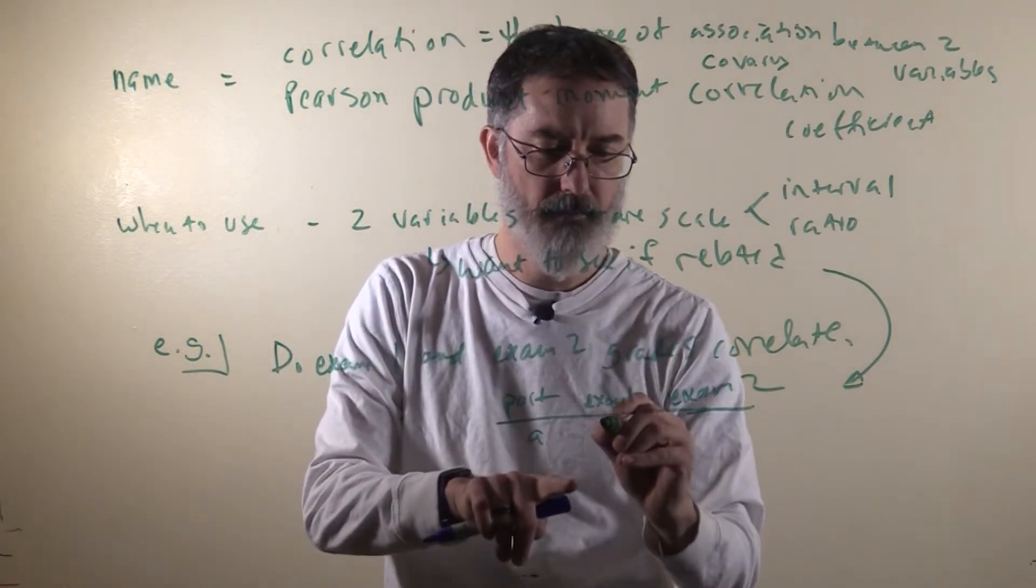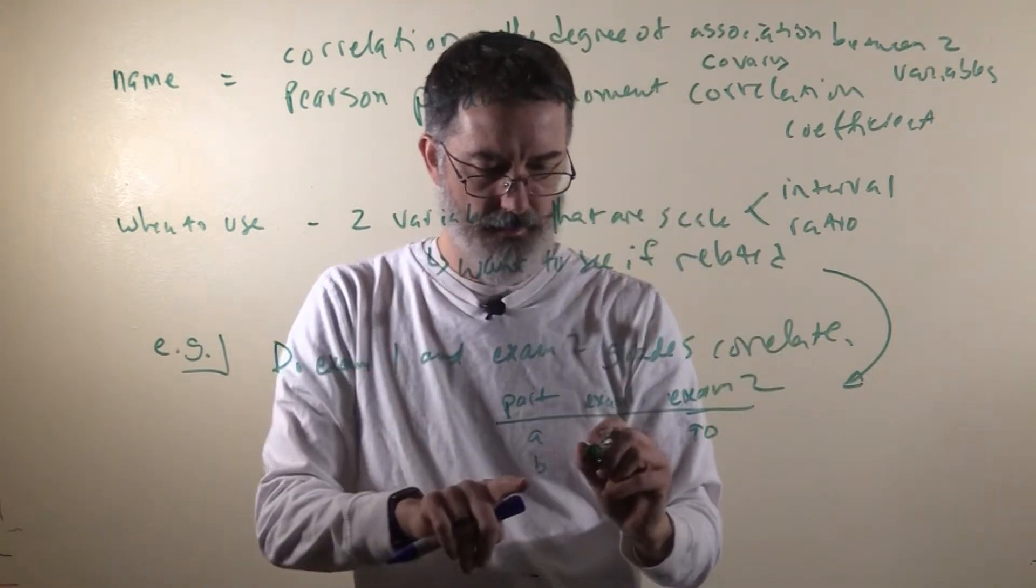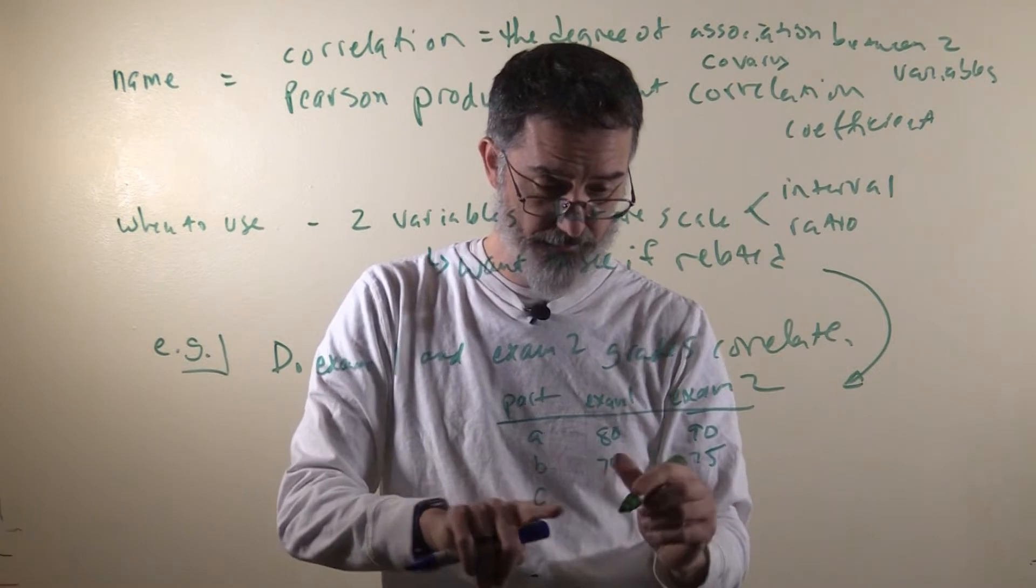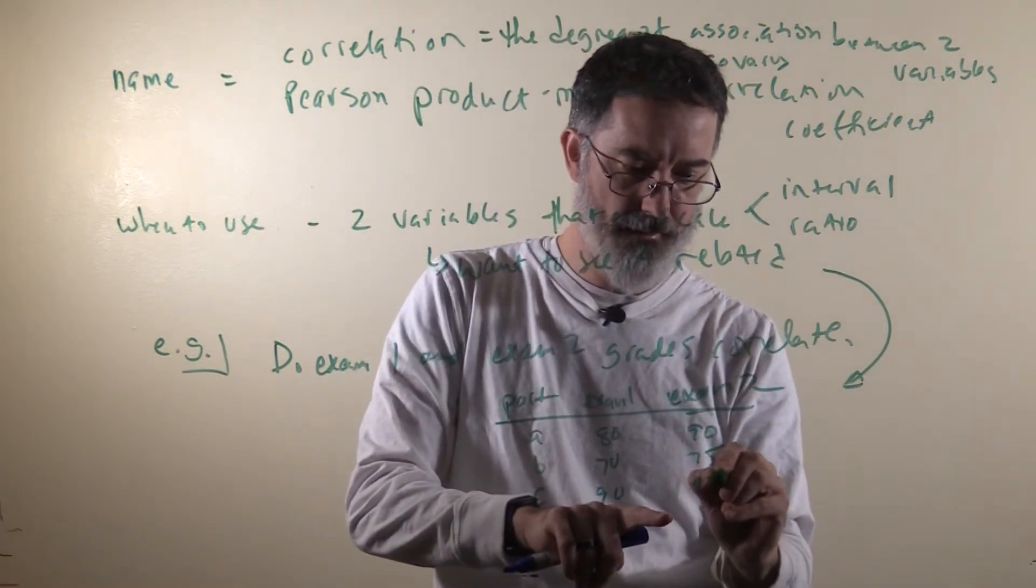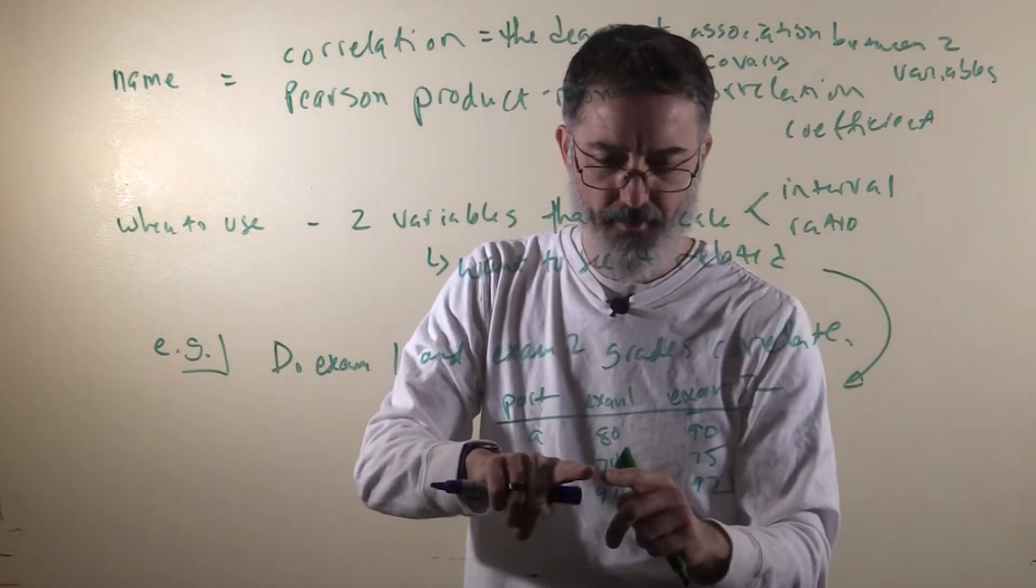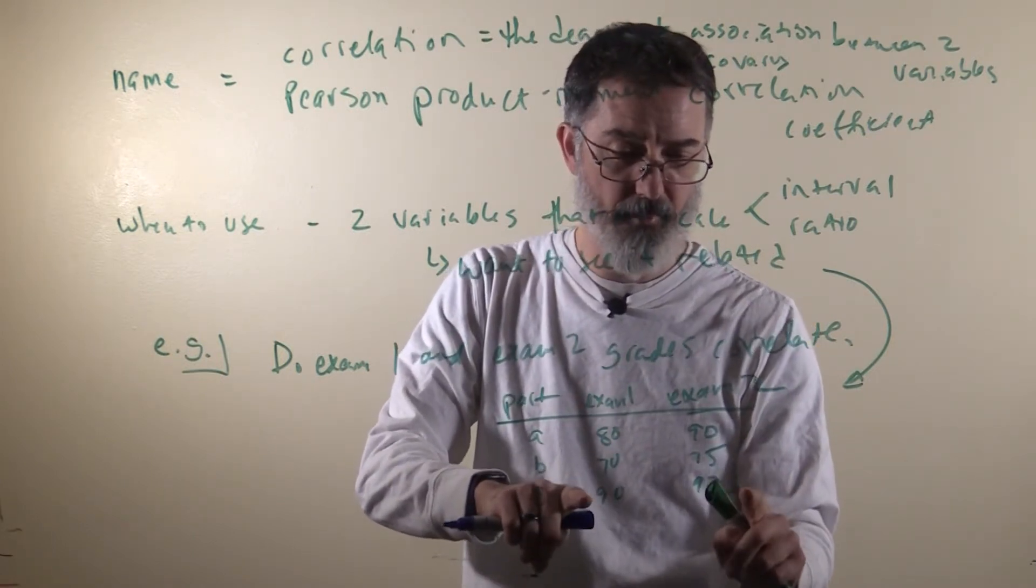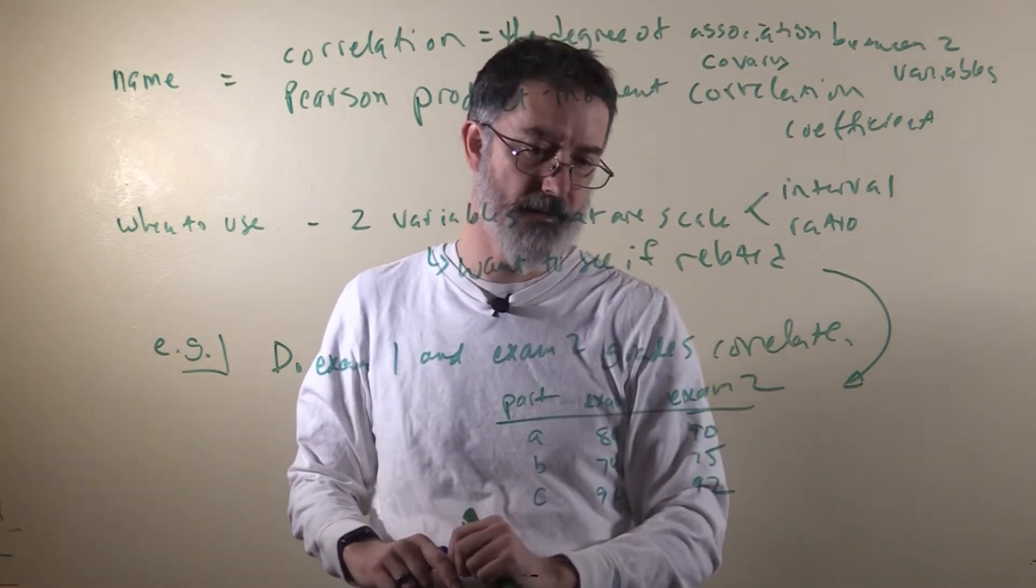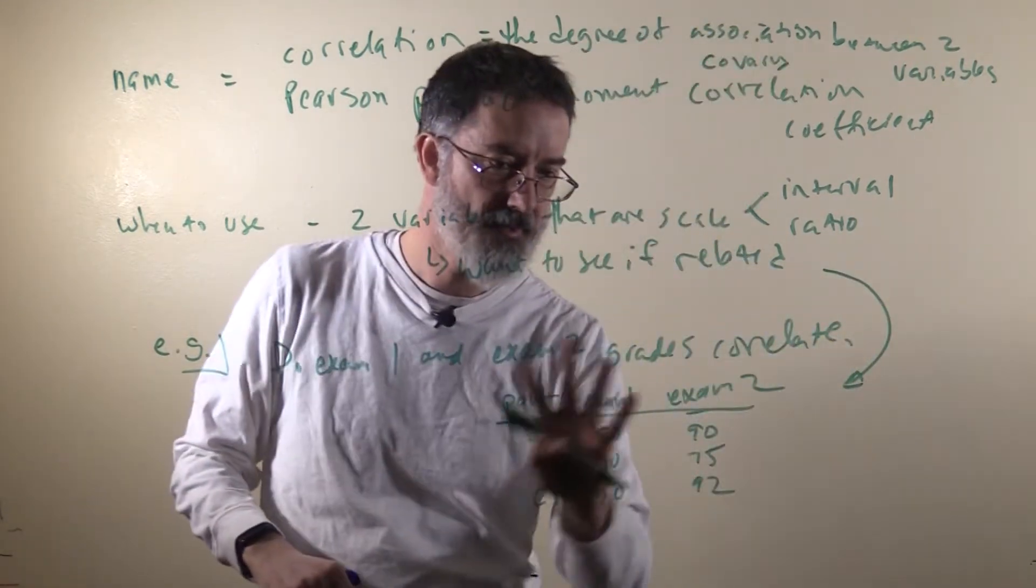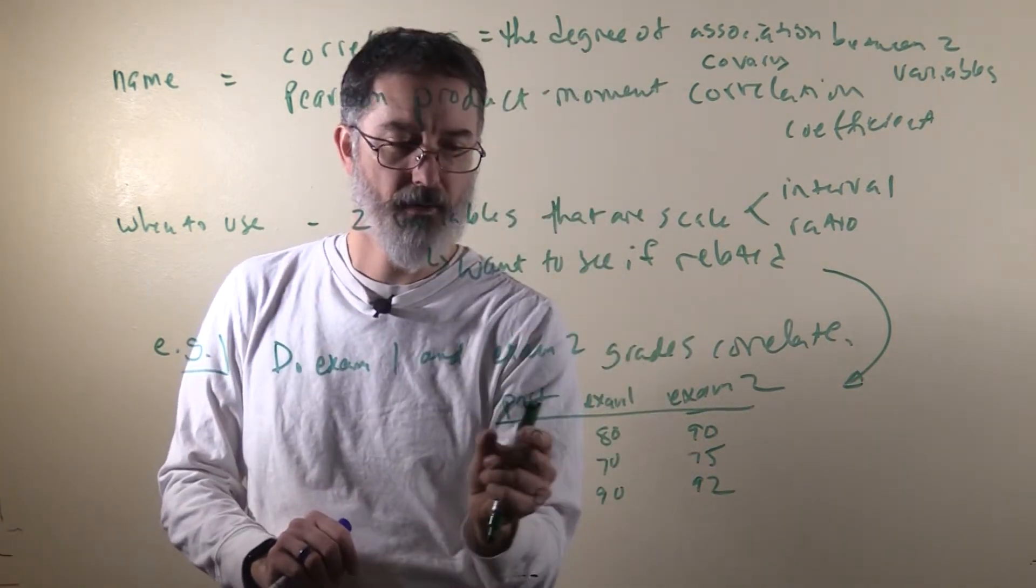Student A, let's say they got an 80 on exam 1 and a 90 on exam 2. Student B got a 70 and a 75. Student C got a 90 and a 92. We will see, just with this simple example, is there an association? The person who got the lowest on exam 1 also got the lowest on exam 2. The person who got the highest on exam 1 got the highest on exam 2. So there would probably be a correlation with this data, because exam 1 and exam 2 scores are related. These two variables have to be set up this way, where there are two measures associated with one person, or something where you can connect them.